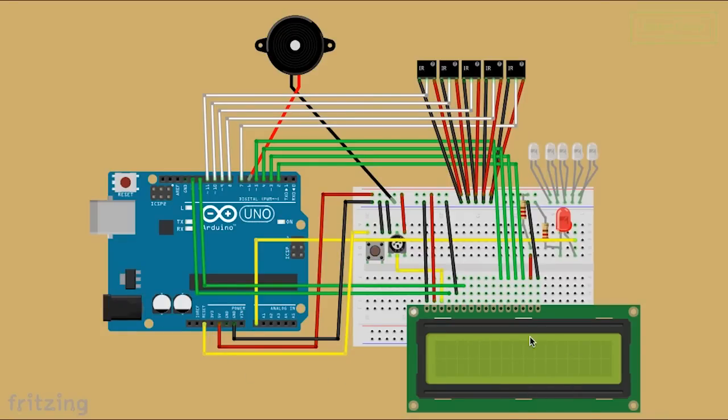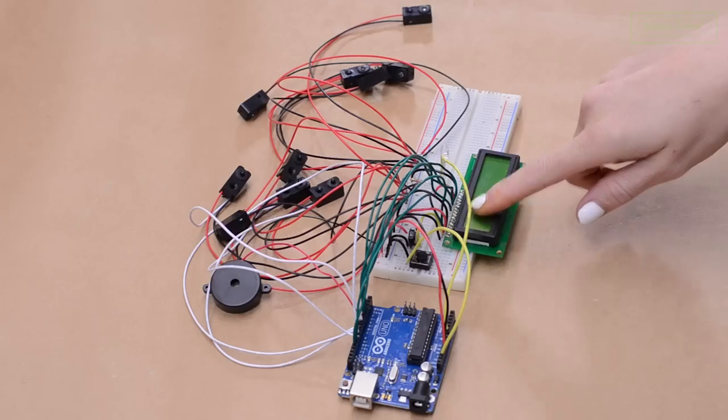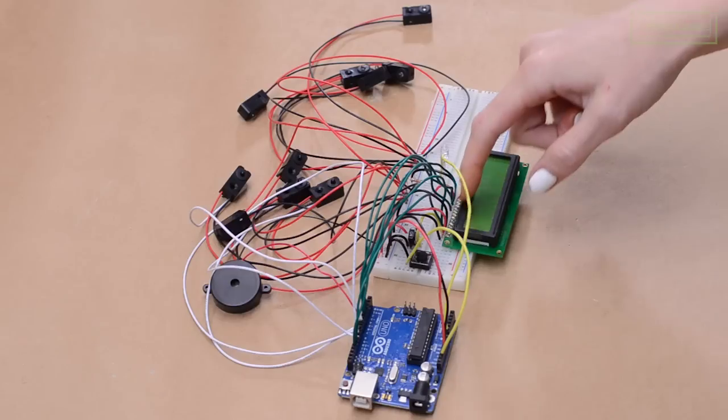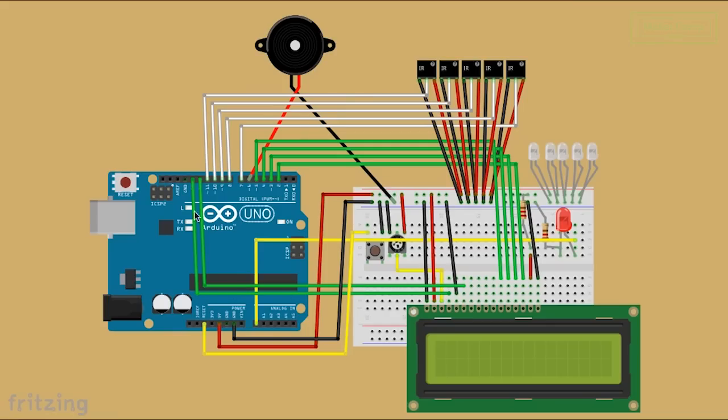The LCD screen has two rows that each hold up to 16 letters. This is what we will use to display the scores. The green wires connect the LCD pins to the Arduino's digital pins. The potentiometer controls the screen's contrast.